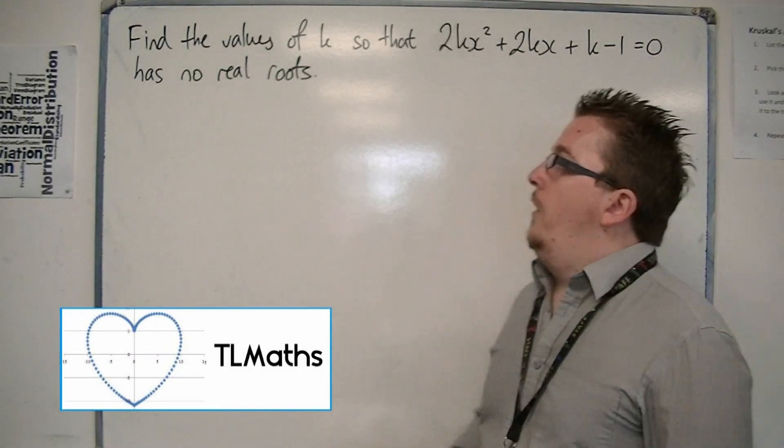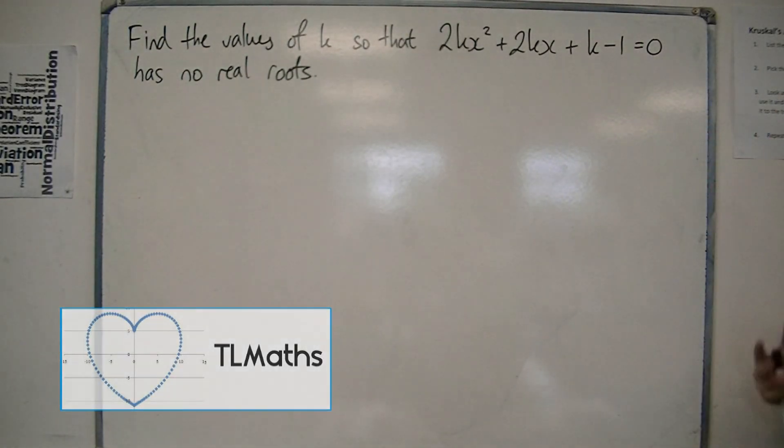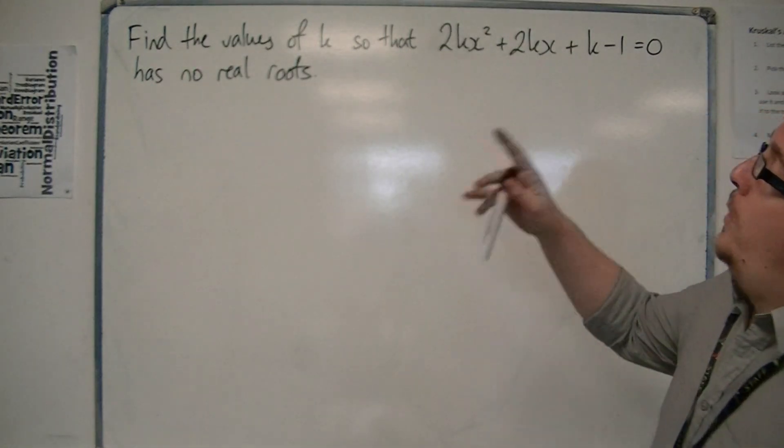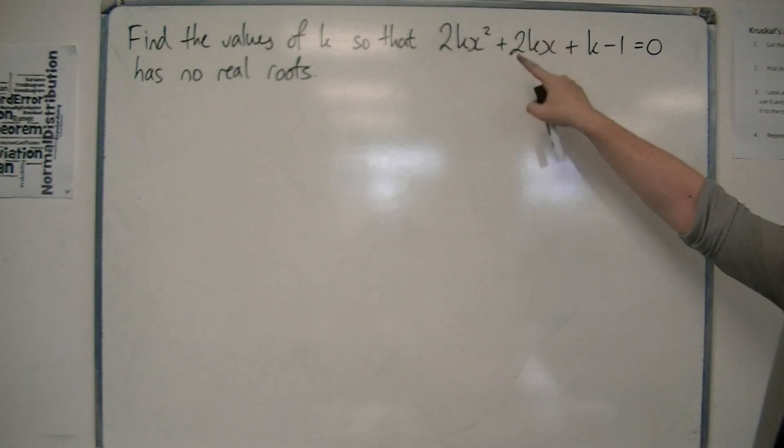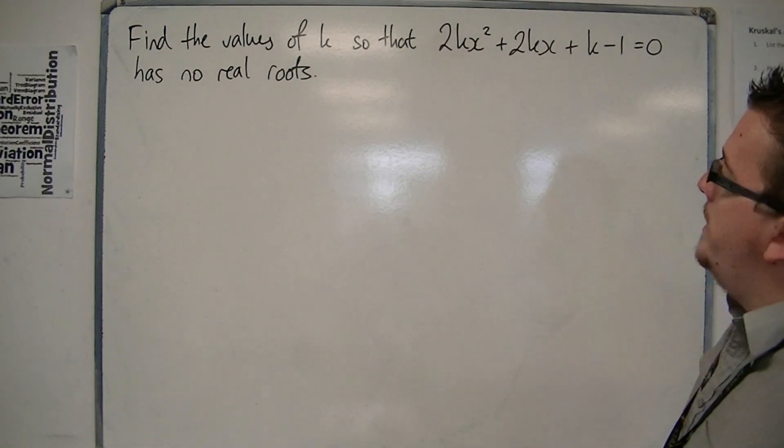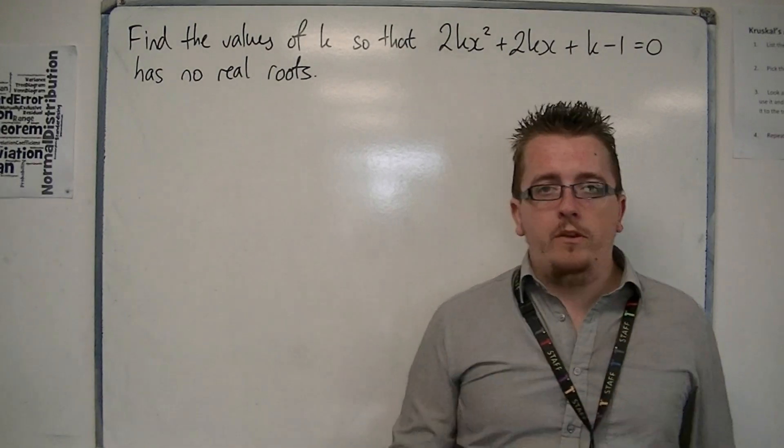We're looking at another example of a quadratic inequality that uses the discriminant. This question: find the values of k so that 2kx² + 2kx + k - 1 = 0 has no real roots.